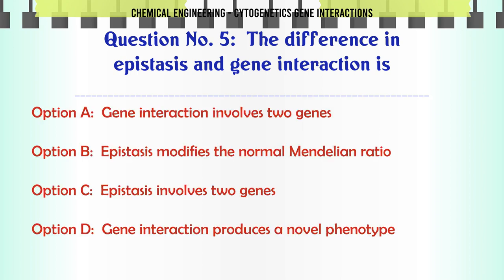The difference between epistasis and gene interaction is: A. Gene interaction involves two genes, B. Epistasis modifies the normal Mendelian ratio, C. Epistasis involves two genes, D. Gene interaction produces a novel phenotype. The correct answer is Gene interaction produces a novel phenotype.